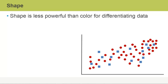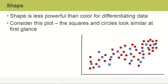In charts, shape is less effective than color for differentiating data. Have a look at this scatter chart — the squares and circles look similar at first glance and don't really have the impact necessary to make trends stand out. If they were the same color, they would be pretty much indistinguishable. Color is really the element that brings out differences here.